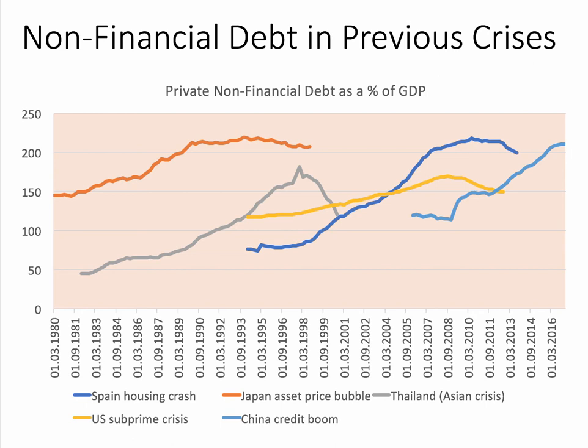Ahead of a crisis, you often get a significant build-up of private sector non-financial debt — debt held by households and companies. The Chinese credit boom is clear in this data. Non-financial debt is more than 200% of Chinese GDP, with especially a surge in debt amongst local authorities in China. Is this going to end abruptly in another financial crisis?